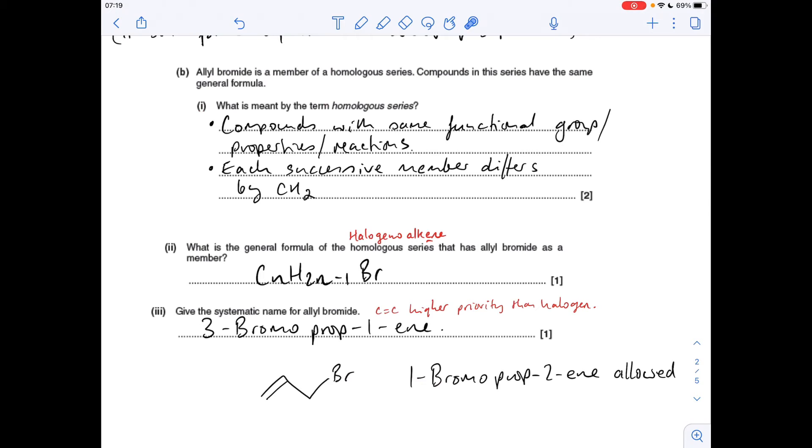Systematic name for allyl bromide. Technically, it is 3-bromo-prop-1-ene, and that's because the CC double bond has a higher priority than halogen. So when it comes into naming organic molecules with more than one functional group, we have to adopt the priority system. That's not tested at A-level, so that is the answer. You could have said 1-bromo-prop-2-ene.